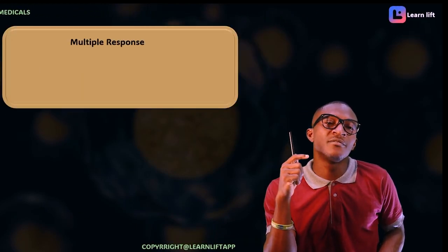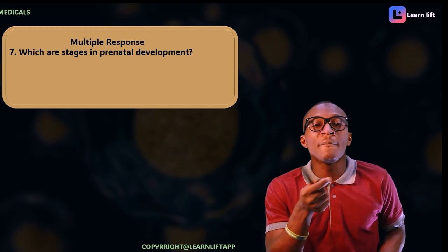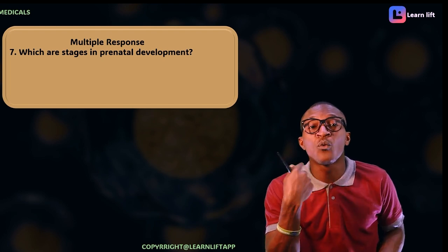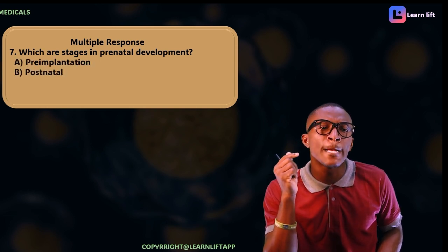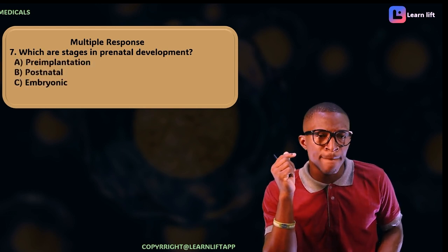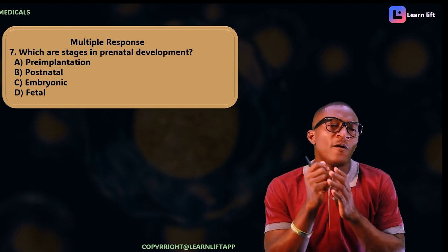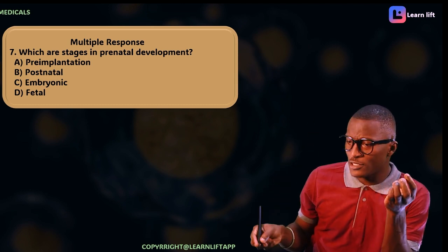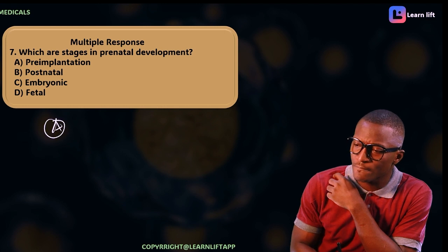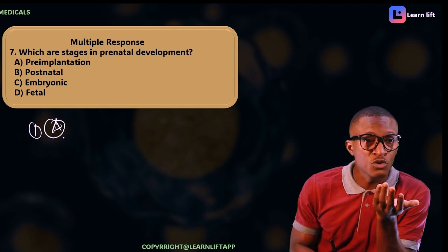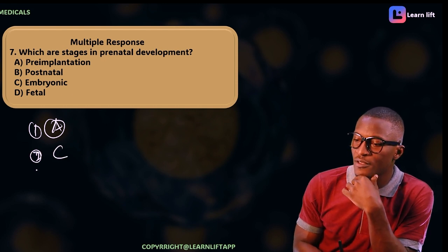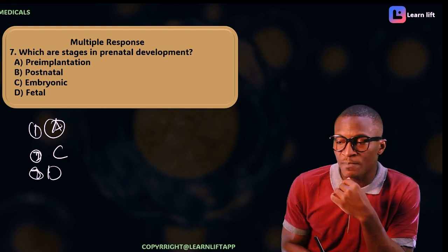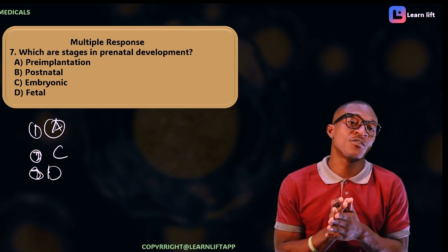Next is a multiple response question — meaning you can have more than one answer. The question asks: what are the stages in prenatal development? Options are pre-implantation, postnatal, embryonic, and fetal. There are three stages. Pre-implantation is one stage, embryonic is another, and fetal is the third. Postnatal is not part of prenatal development, so the answers are A, C, and D.